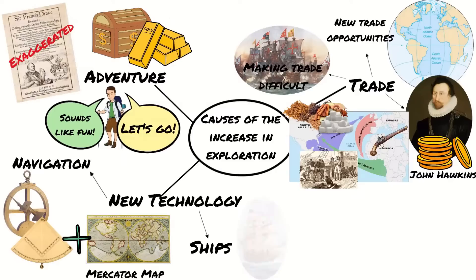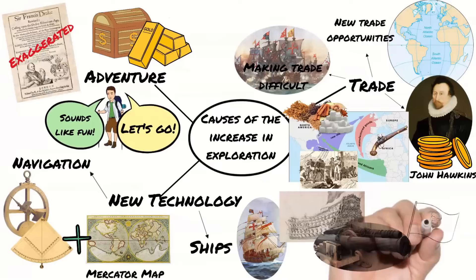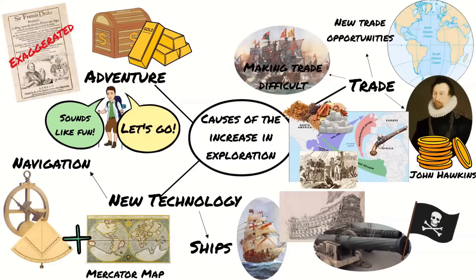Another new technology that made it easier to cross the Atlantic were innovations in ship design. Ships now had bigger sails that meant they could travel much faster, and the boats were built to be much more stable in the water meaning they could take more supplies with them. Added to this was the development of guns and their installation on ships, which meant that ships were more able to protect themselves from pirates.